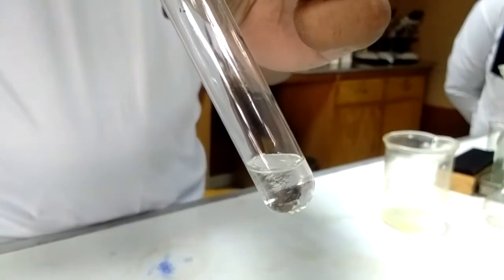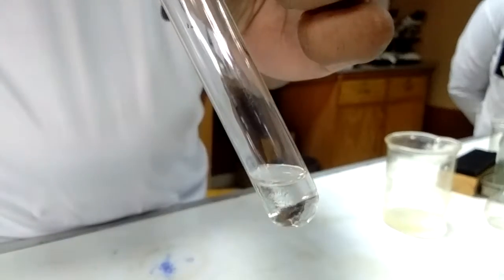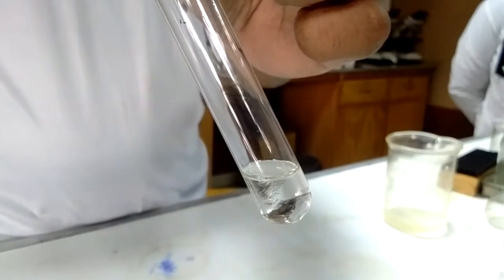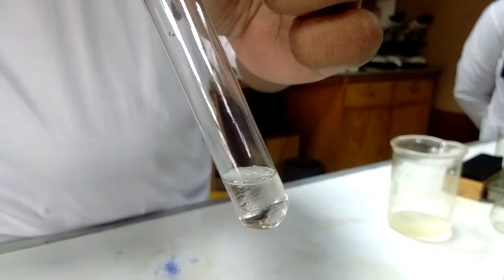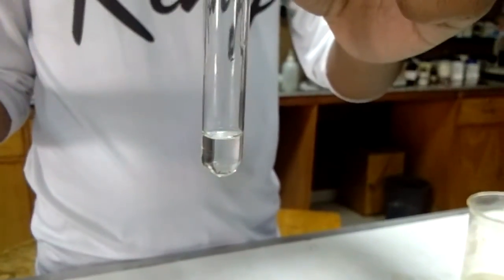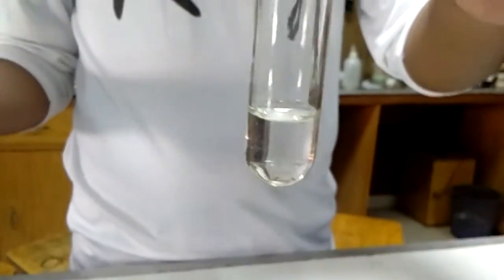You can see that after adding the acid, there is concentrated sulfuric acid. Clearly, there are two layers - one layer above and another below in the test tube.